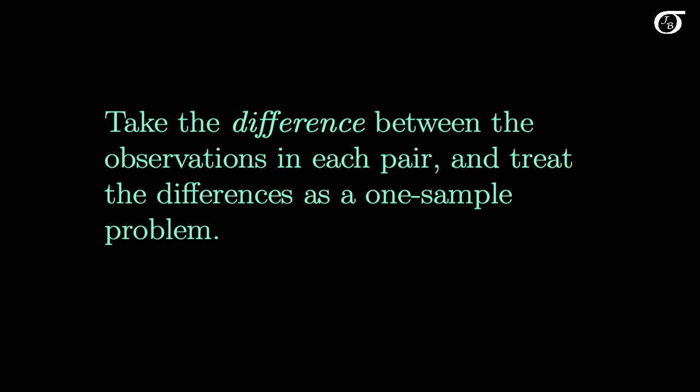To actually do the analysis, it's going to be pretty straightforward for us. We take the difference between the observations within each pair, and then simply treat those differences as a one-sample problem. If we've been keeping up and we know our one-sample problems, then this is going to be pretty easy.